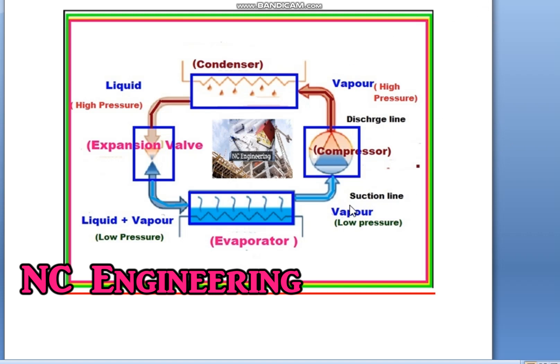This cycle starts at the section of the compressor, where low pressure vapor enters the compressor and the compressor compresses it to a very high pressure, increasing its temperature and pressure, and at the discharge line it exits as a high pressure vapor.